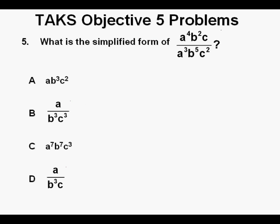Problem 5. What is a simplified form of a to the 4th b squared c over a cubed b to the 5th c squared? These types of problems with all the letters and exponents may seem intimidating, but if we take a closer look at the answer choices, we'll see that the problem can be made a whole lot easier. Instead of looking at the whole problem, let's just look at it one letter at a time in the answers.